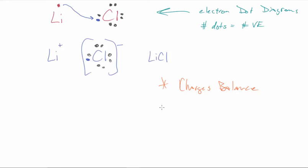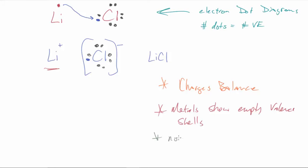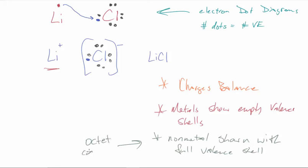Notice on this also — something else I want you to see — the metal shows the empty valence shell. My lithium here, when I redrew this, showed an empty valence shell. So metals show empty valence shells. That should make sense because they lost their valence electrons. When we went over ionic radius, you understand that when they lose those valence electrons, they lose that outer energy shell — that valence shell. We're just showing that in the drawing. And then the non-metal is shown with the full valence shell, because the non-metal completed its octet in the transfer.